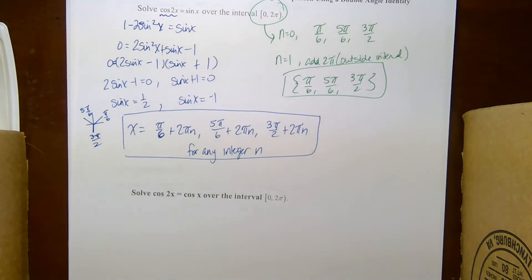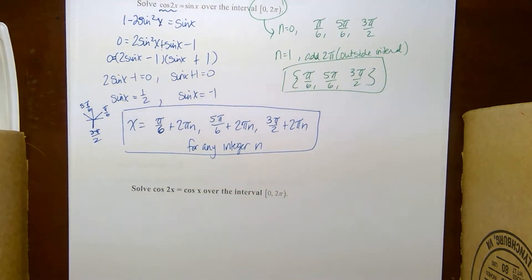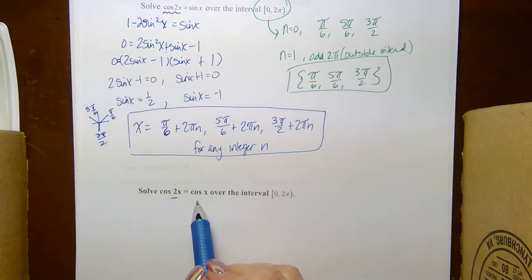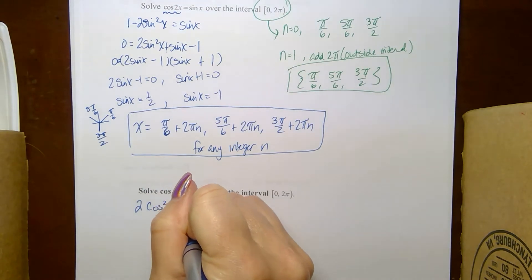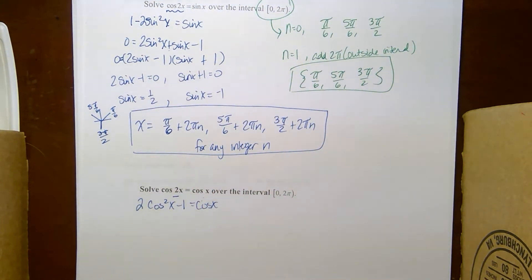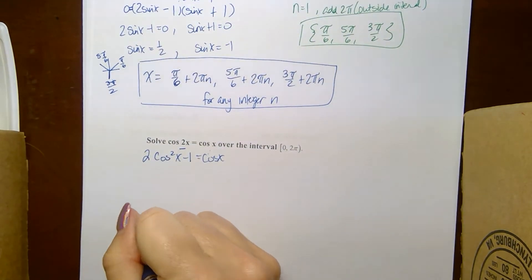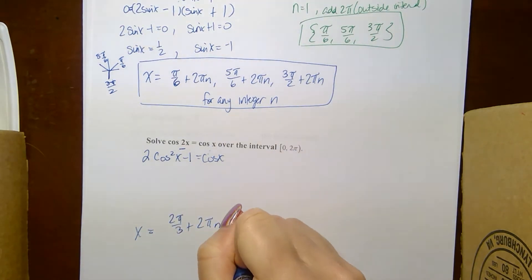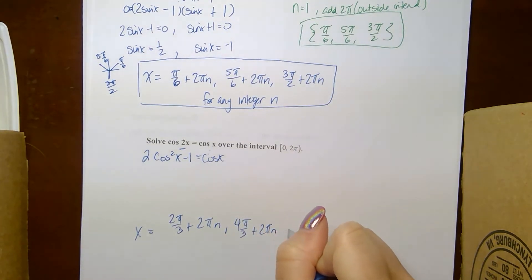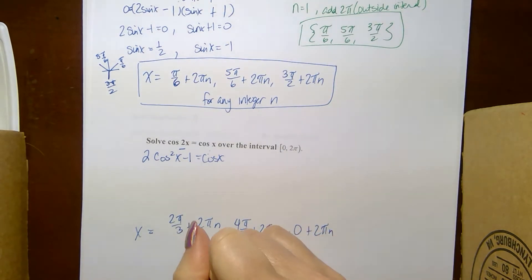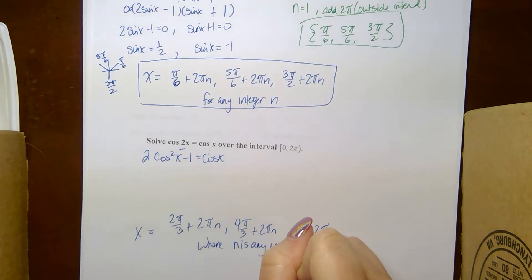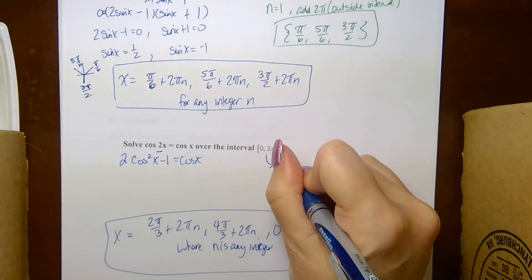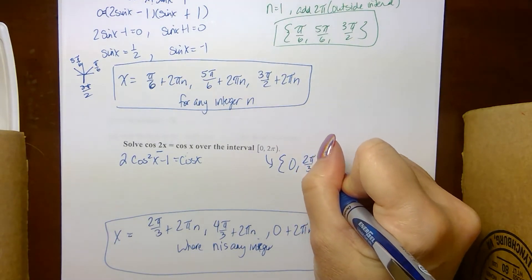The next problem also has a mismatched argument, so I use a double angle substitution. This time I need to stay in terms of cosine, so I choose 2 cosine squared x minus 1. When solved, the all-solutions statement becomes 2π/3 plus 2πn, 4π/3 plus 2πn, and 0 plus 2πn. Those are the only three angles within the interval: 0, 2π/3, 4π/3 — since 2π is not included.